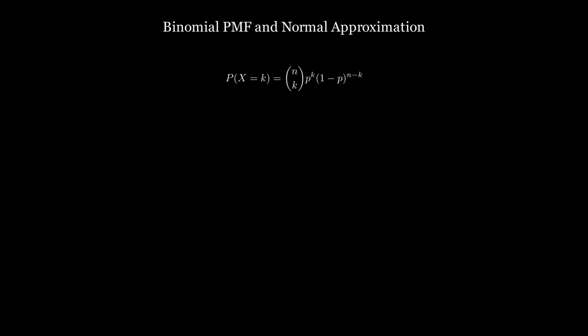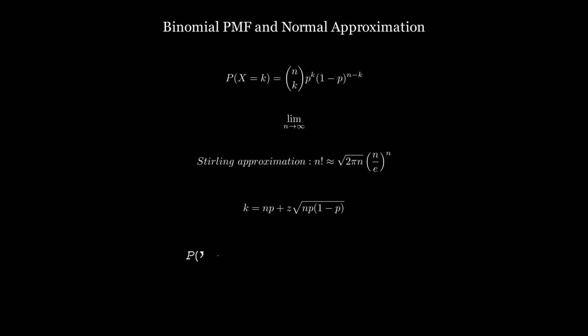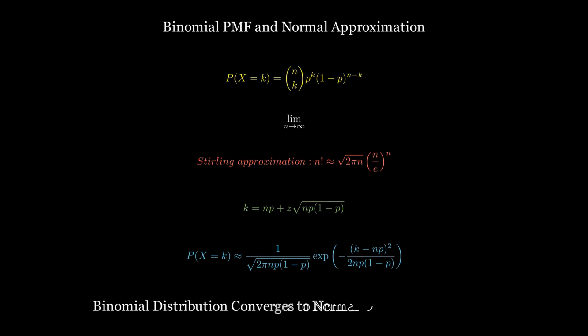For the detailed mathematical proof, we start with the probability mass function of binomial distribution and take the limit as n → ∞. We then apply Stirling's approximation, which approximates the factorial of a very large number: n! ≈ √(2πn) · (n/e)^n. After a few manipulations, we arrive at the probability density function of the normal distribution, as shown on screen.